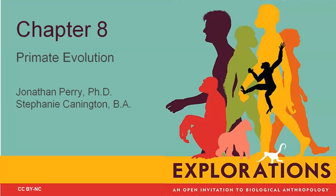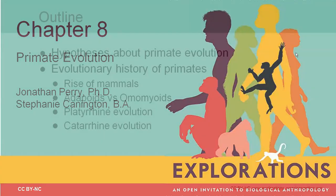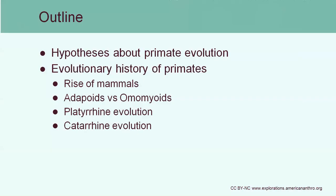Welcome to Physical Anthropology. In Chapter 8, we're going to be taking a look at primate evolution. The topics for today include looking at the various hypotheses about primate evolution and why it occurred, and then looking at the evolutionary history of primates, including the rise of mammals, the adipoids and omomyoids, the platyrrhine evolution, and the catarrhine evolution.